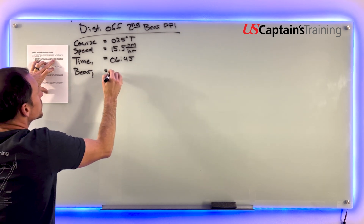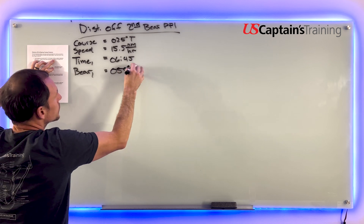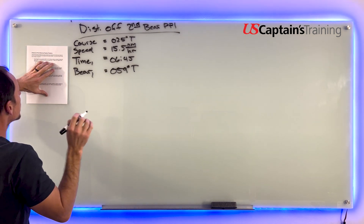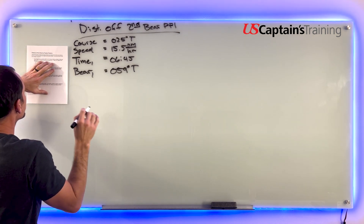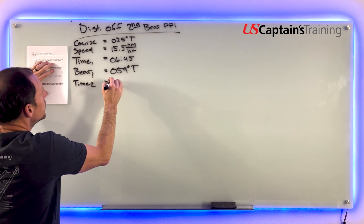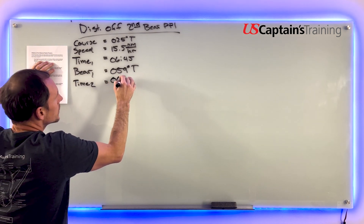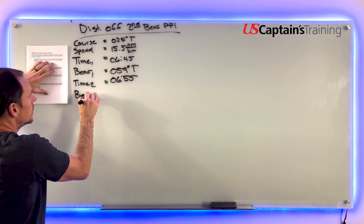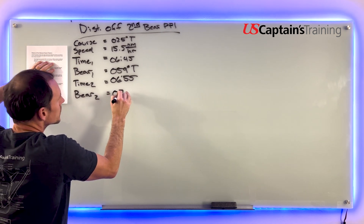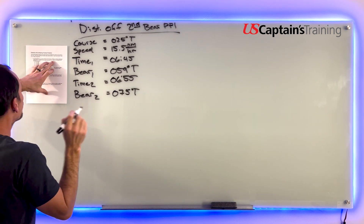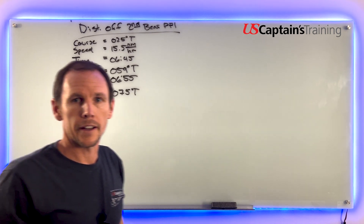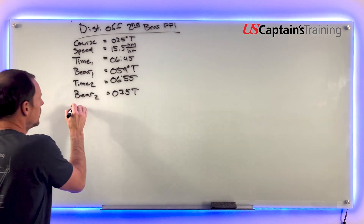At 0655 the same lighthouse bears 075 degrees true. Time two is equal to 0655, six hours 55 minutes, and bearing two is equal to 075 degrees true. It asks: what is your distance off at the second bearing?